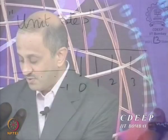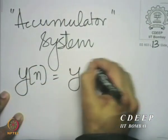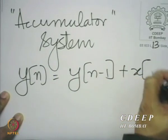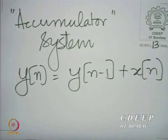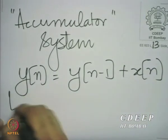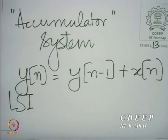It is also useful in describing what is called the accumulator system. An accumulator system, as the name suggests, accumulates the inputs — it keeps taking the sum of what it already has with the current input. If you consider the LSI system described by this equation, where the output at a current time is equal to the output at the previous time plus the input at the current time, it keeps accumulating. This is called an accumulator system.